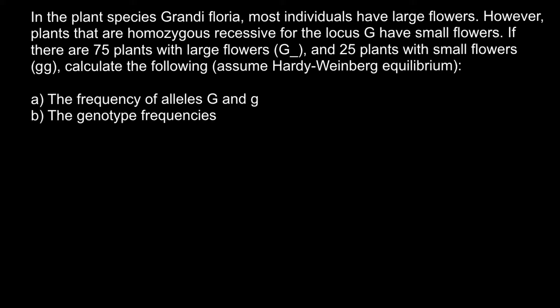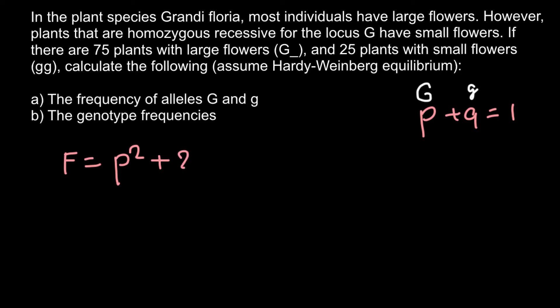In order to solve this problem, everything you have to know is the Hardy-Weinberg formula. In this formula we have two alleles, allele p and allele q. When we add these two alleles we get one — that is 100%. In our problem, p stands for the dominant allele (capital G) and q stands for the recessive allele (small g).